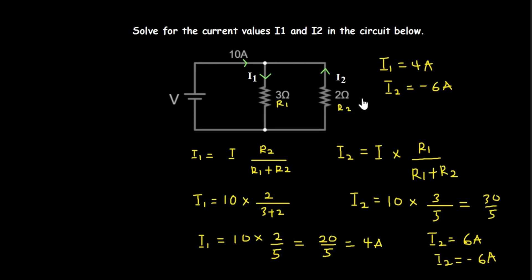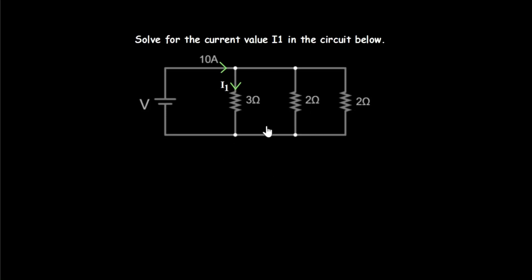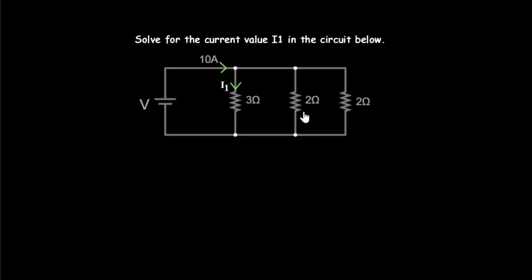For the next question, we need to find the current i1 in the first branch of a circuit that has three parallel branches. Since our formula is for two branches, we first need to reduce the circuit. We can combine the two 2-ohm resistors that are in parallel into a single equivalent resistance.